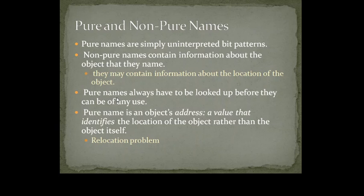With pure names, they refer to the address. Now because of this, there can be a problem: the object may be relocated. In case of relocation, if you have a name which refers to the address instead of the actual object, you will keep referring to that particular address, and at that address some other object may be found. So if you have a non-pure name, it will carry the location of the object along with the object itself, so you may prefer non-pure names.